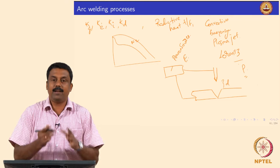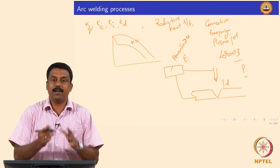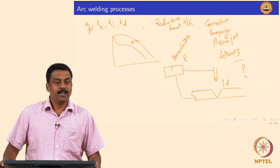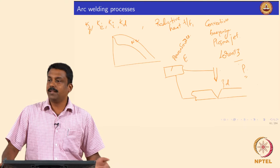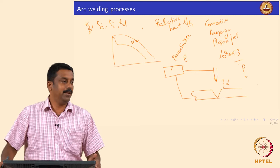Would you ignite the arc just like that? You pass a current and an electric field is created — the potential difference is generated because you have a circuit. But the arc will not be ignited just like that. Either you need to heat the electrode to very high temperature to trigger thermionic emission, but that requires enormous current and electric field.